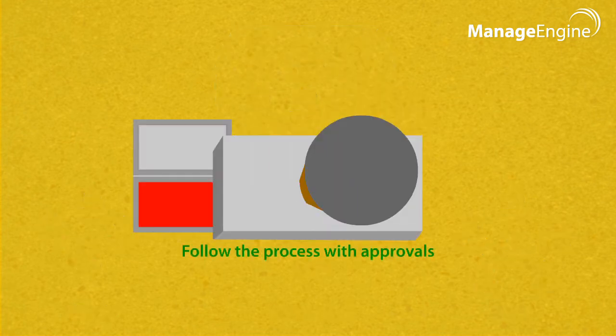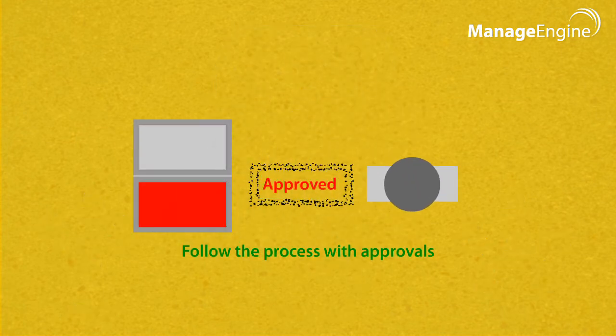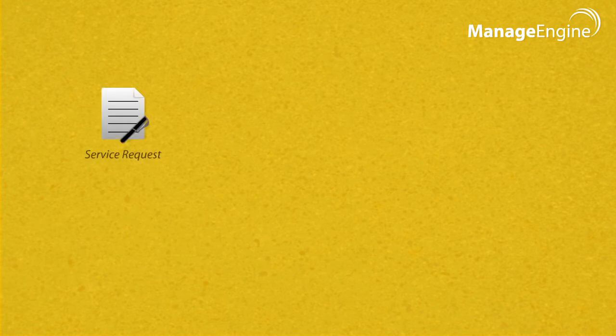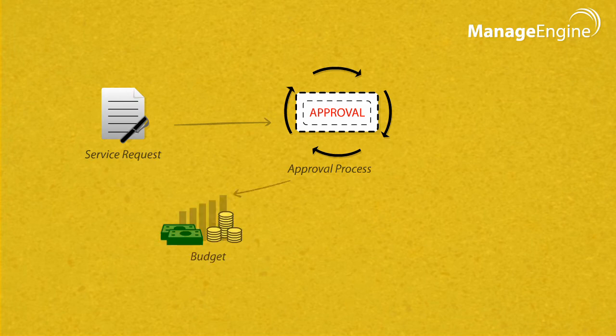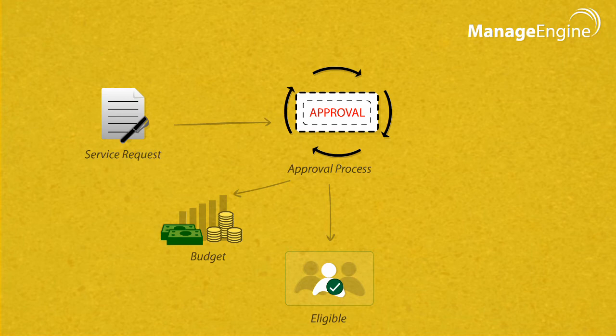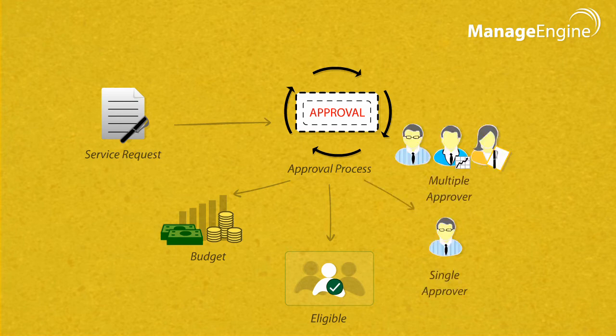Follow the process with approvals. The service request sometimes needs an approval process before the service is delivered. The approval process ensures that the request fits into the budget and the user is eligible to get the service. Based on the service ordered, the approval can either be from a single approver or multiple approvers.